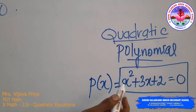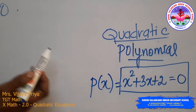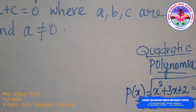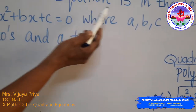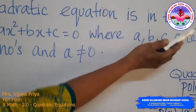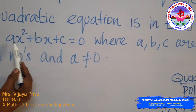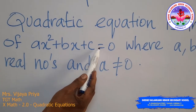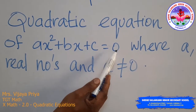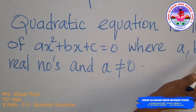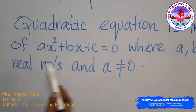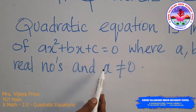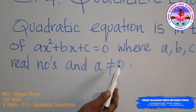Now, coming to the quadratic equation definition: a quadratic equation is in the form ax² + bx + c = 0, where A, B, C are real numbers and A is not equal to 0.